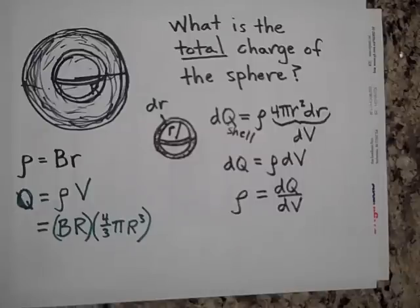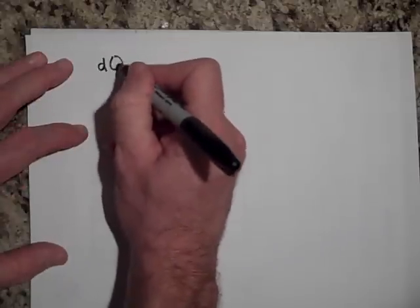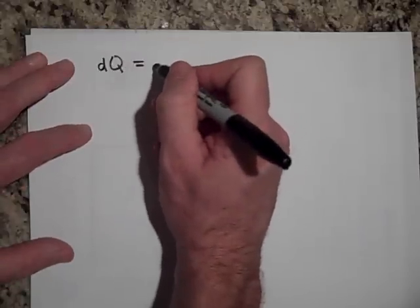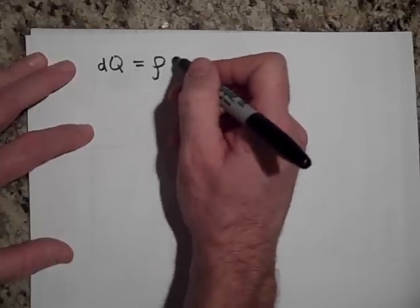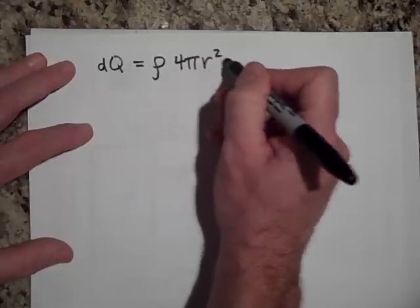In any case, let me find the amount of charge that's in just this shell. Well, it would be this. The amount of charge in that shell, dQ, is equal to what the rho is there. So rather than, well, let me write this over. It's rho times the little volume of the shell, which is 4 pi r squared DR.